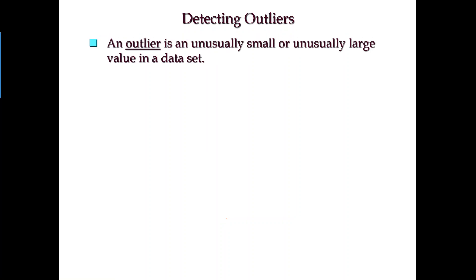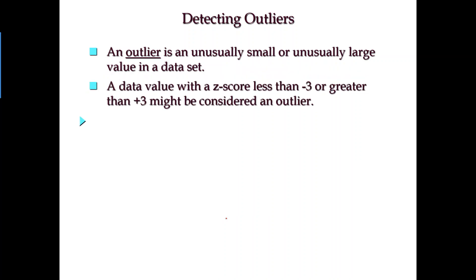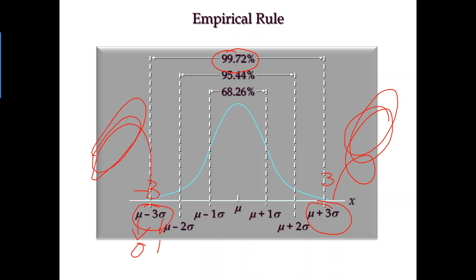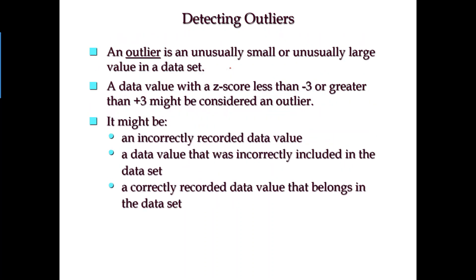So negative 3 and positive 3 become the threshold to determine whether an observation is an outlier. Formally: an outlier is an unusually small or unusually large value in a data set. A data value with a z-score less than negative 3 or greater than positive 3 might be considered an outlier. Looking at the chart, any value in either tail region outside this range is considered an outlier because the empirical rule tells us almost all observations should fall between negative 3 and positive 3.